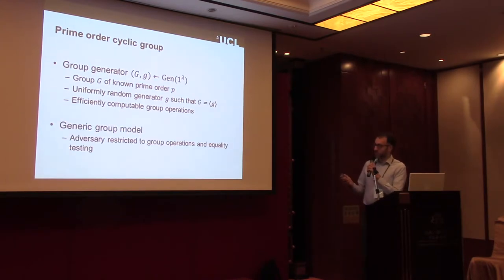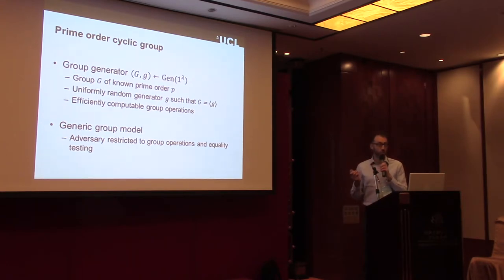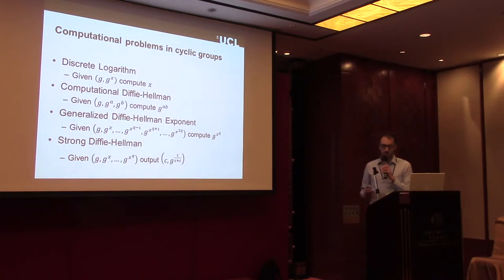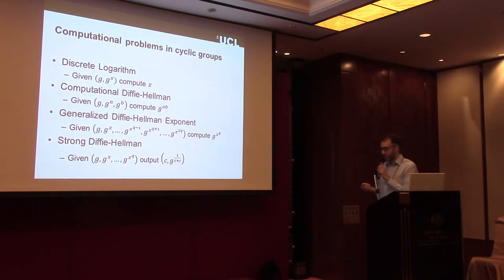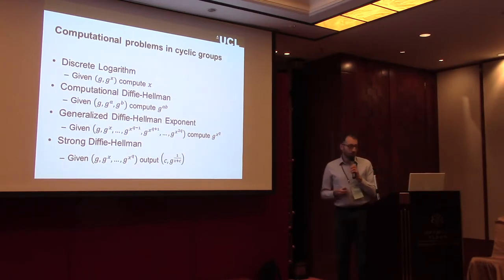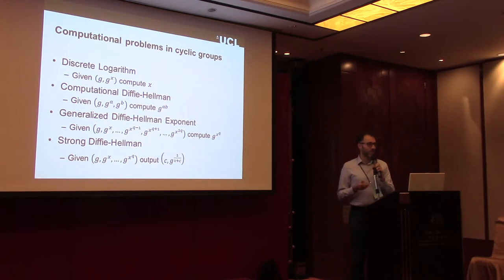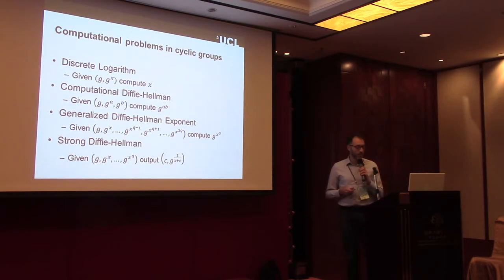Let me briefly mention the generic group model, where we restrict the adversary to using only generic operations: you can multiply elements and test whether elements are equal. We have a bunch of assumptions you could make in a cyclic group, but we've seen a proliferation of assumptions. Especially with pairing-based protocols, we have a wilderness of assumptions. That's the kind of assumption we want to study. We focus on one special class: computational assumptions.